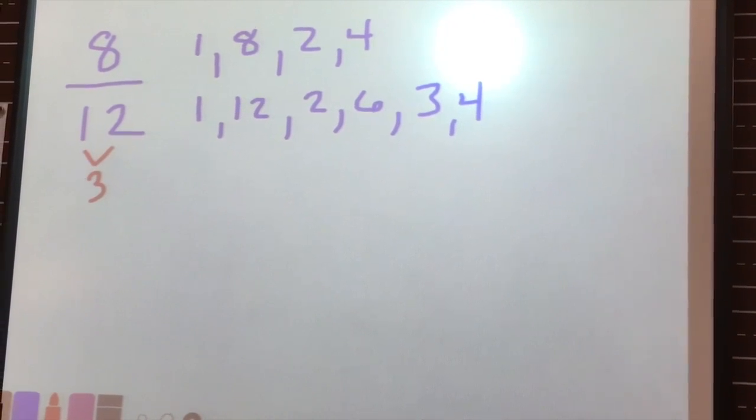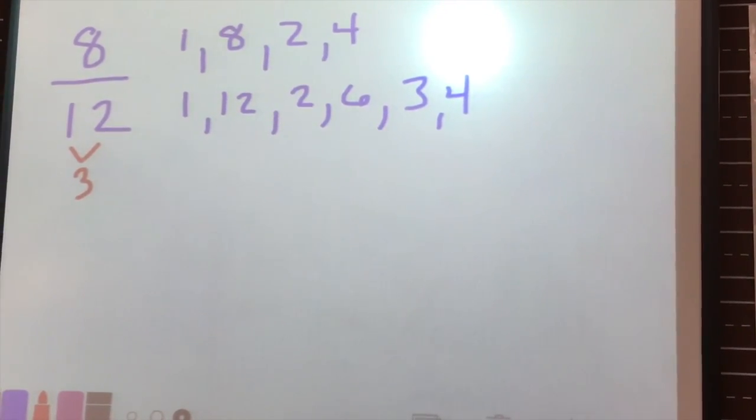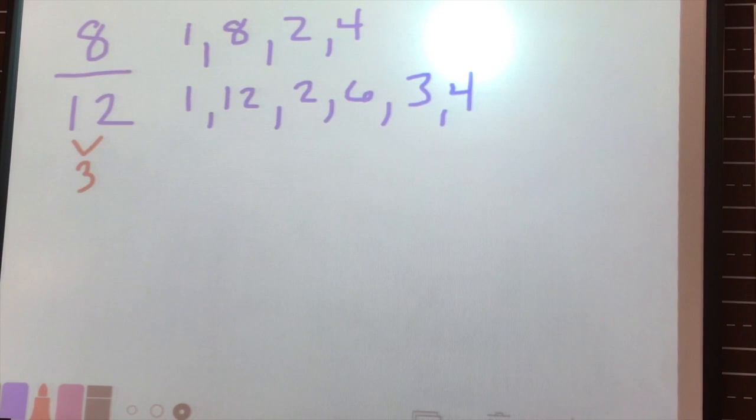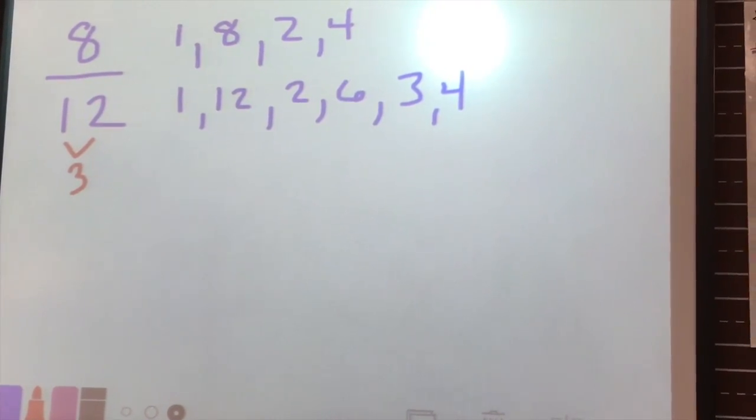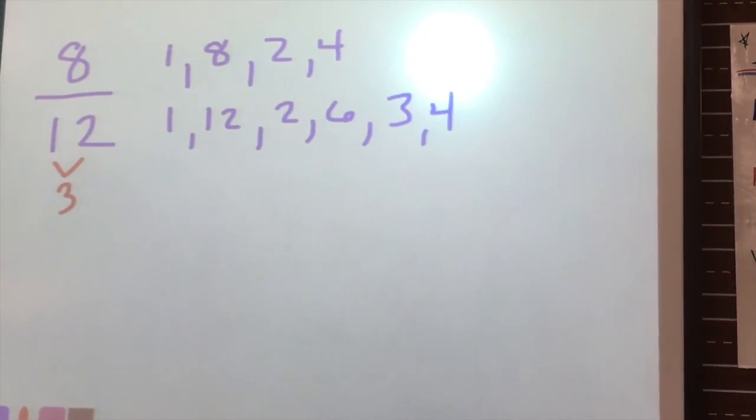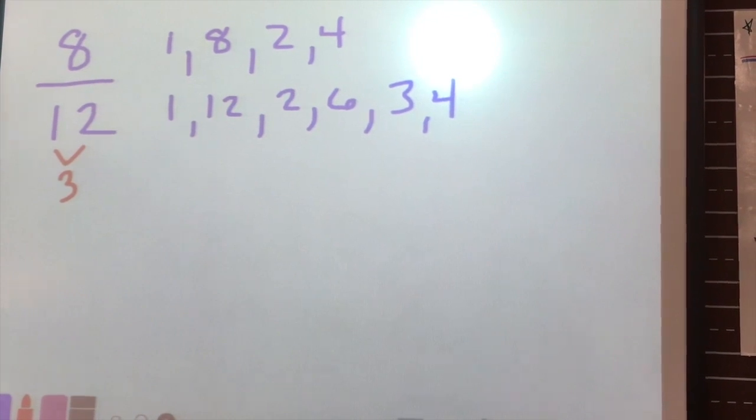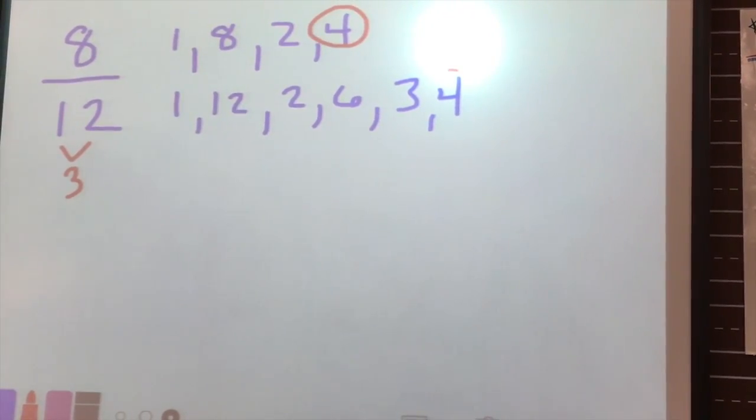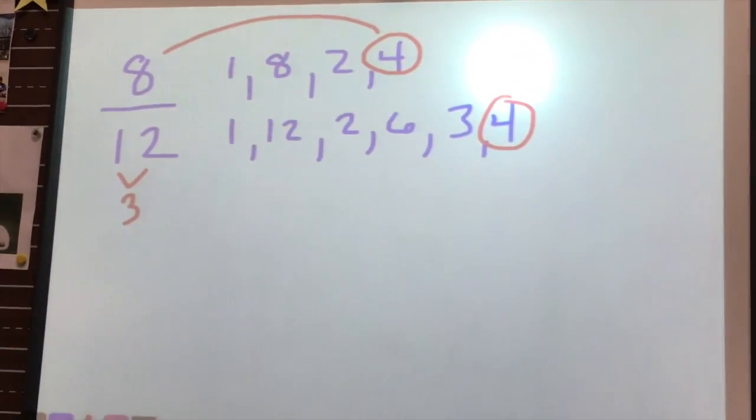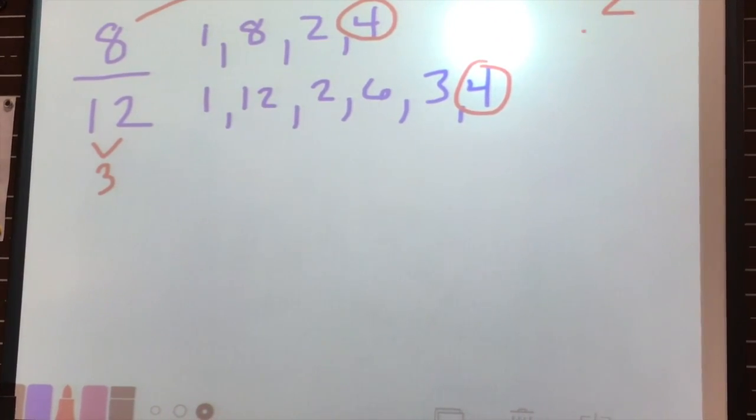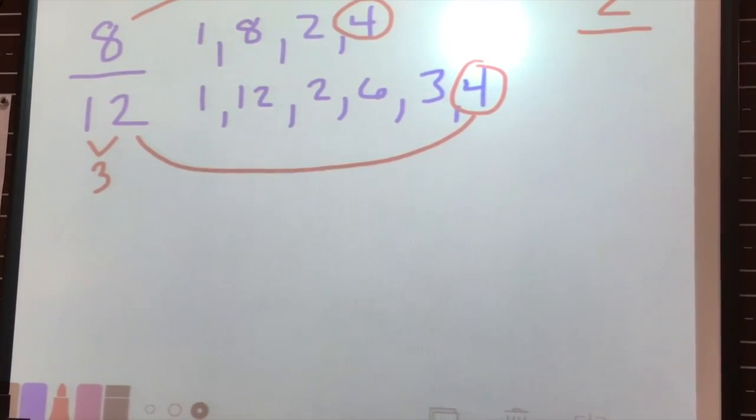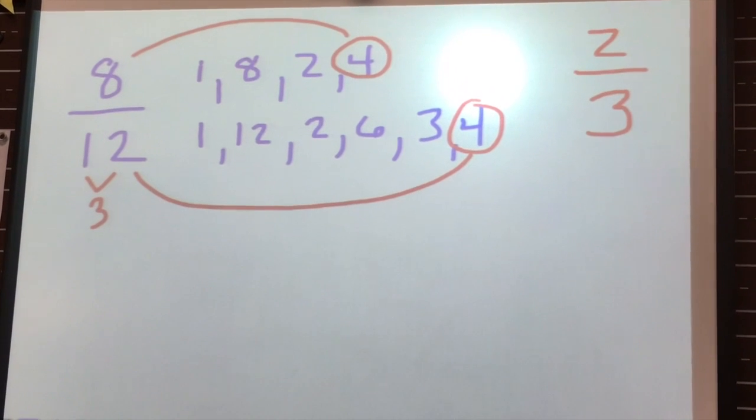And then I look at all my pairs of factors, and I ask myself, what is the greatest common factor? In other words, what is the largest factor in the numerator at the top that is also down at the bottom? And eight is the biggest number on the top, but it's not down at the bottom. So eight's not the answer. The largest factor that's at the top that's also at the bottom is four. So we've been circling the four, and then it just becomes a division problem. I just take this eight, and I divide eight by four. And eight divided by four is two. And then I take twelve, and I also divide twelve by four. And twelve divided by four is three.